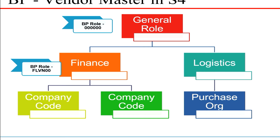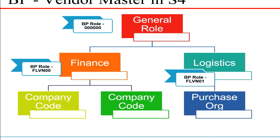FLVN00 is a standard role. We can create our own roles, but the default roles provided are FLVN00 for finance. There is also a role called FLVN01 which is for purchase organization data. So if you are using purchase orders, you will use FLVN00 to create the vendor and then extend it to the purchase organization.